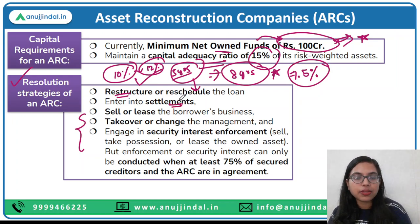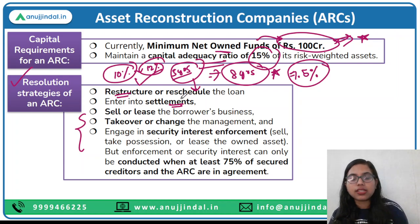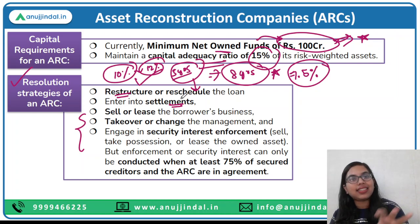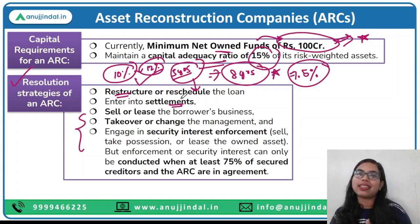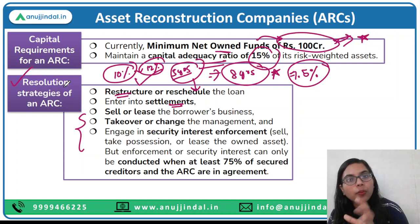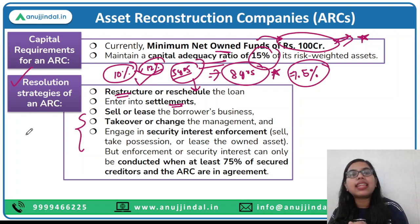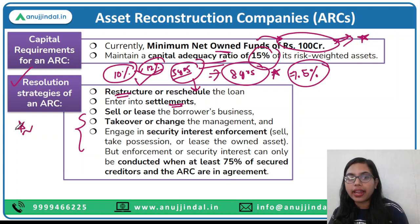Second could be entering into any kind of settlement based on the collateral. Third is selling or leasing the borrower's business — suppose the borrower has certain businesses and is not making repayment. ARC can either sell the business of that borrower or lease it out, and the money received can be used accordingly. One important point: ARC purchases NPAs from banks at a discounted rate — a mutually agreed value that is lower than the actual rate — because ARC also needs to earn something and clean up the balance sheets of these banks.